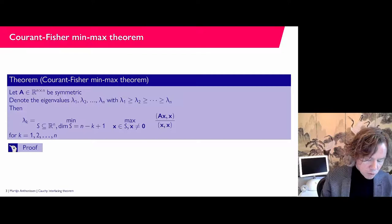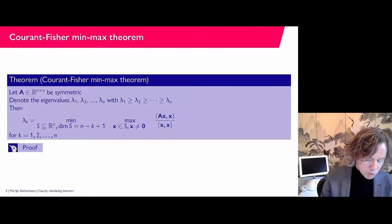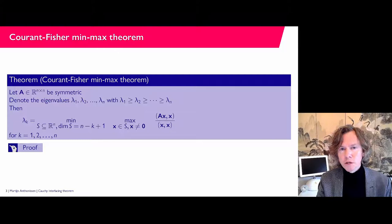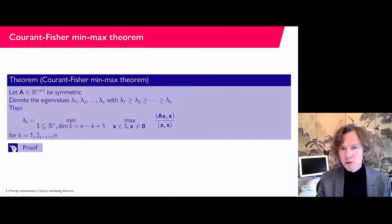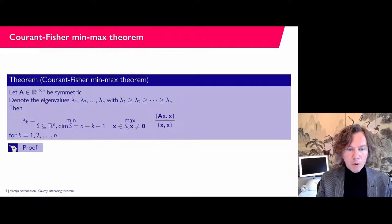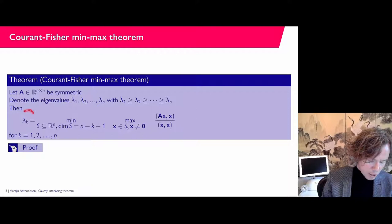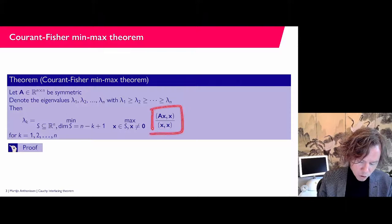So first, Courant-Fisher. What does it say? Suppose we have a symmetric square matrix. As we know, a symmetric matrix has real eigenvalues. Let's denote these eigenvalues with λ₁ up to λₙ and order them, so λ₁ is the biggest — furthest to the right on the real axis — and we don't look at absolute values, just the size of the number. So λ₁ is the biggest, then λ₂, and so on up to λₙ. Then for any eigenvalue λ_k, where k can be anything from 1 up to n, you can give a characterization.